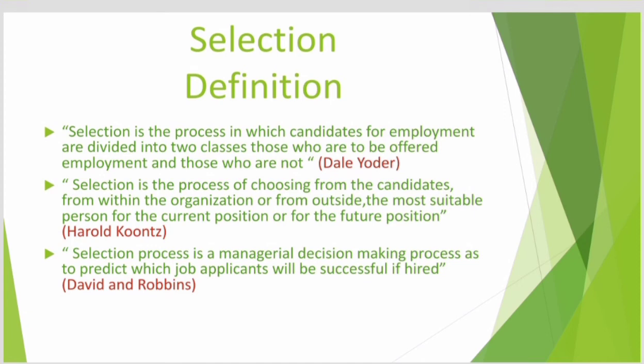The third definition is given by David and Robbins: 'Selection process is a managerial decision-making process to predict which job applicants will be successful if hired.' Selection is the process of choosing from the group of applicants those individuals best suited for a particular position.